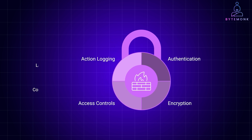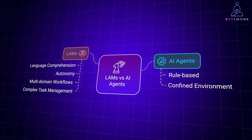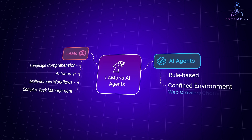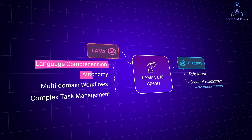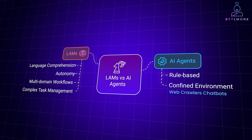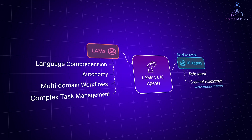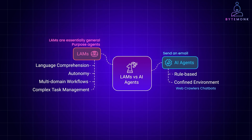LAMs may sound similar to AI agents, but they go beyond traditional rule-based automation. AI agents usually follow a specific set of rules in a confined environment, like web crawlers or customer support chatbots. LAMs, however, combine language comprehension with autonomy, working across multiple applications, domains, and workflows. An AI agent might handle a simple task like sending an email, but a LAM can take on an entire project — scheduling a team meeting, drafting the agenda, and sharing last month's performance report. LAMs are essentially general-purpose agents that interpret complex instructions and act across different systems.